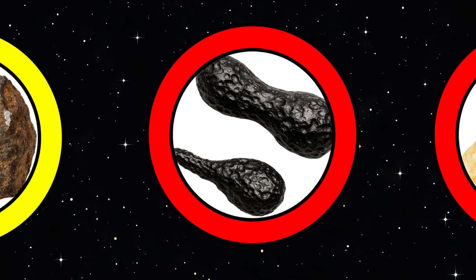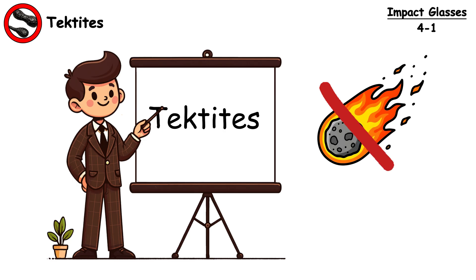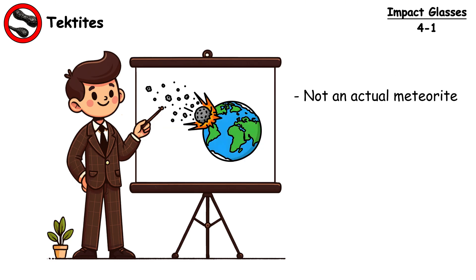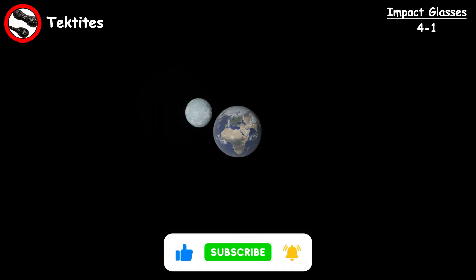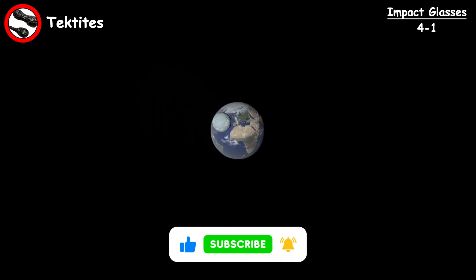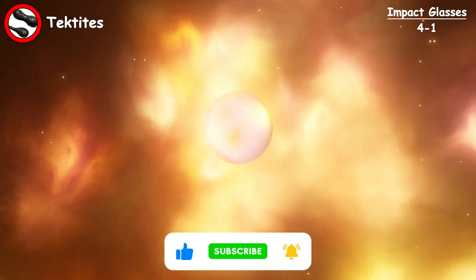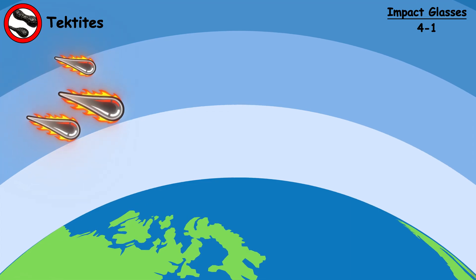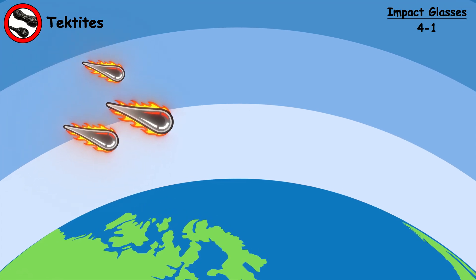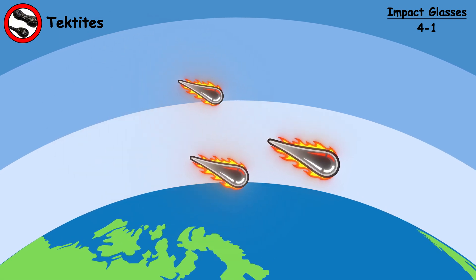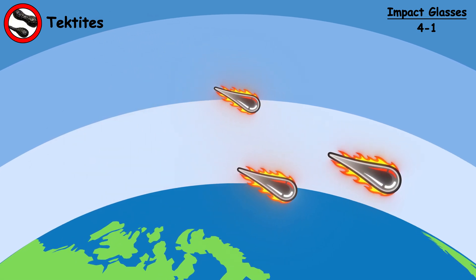Tektites. Tektites are not meteorites. They're actually Earth rocks melted and launched into space by meteorite impacts, and then fall back to Earth. When a large meteorite strikes, the extreme pressure blasts surface rocks skyward. The molten droplets then cool into glass as they arc through the atmosphere, before landing hundreds of miles away.